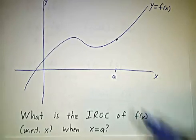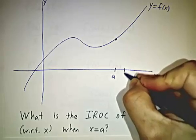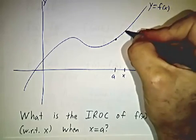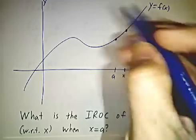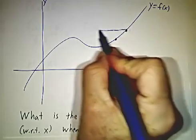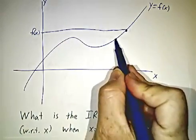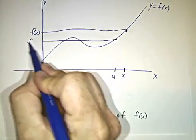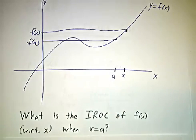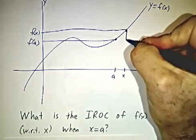And the way we do this is we take a value of x that's nearby, and we look at the value here. Here's f of a and here's f of x. Okay, I can't draw worth a damn, but there it goes.